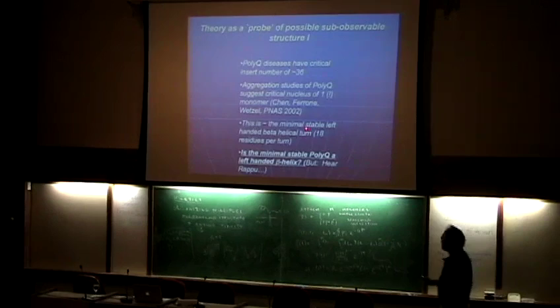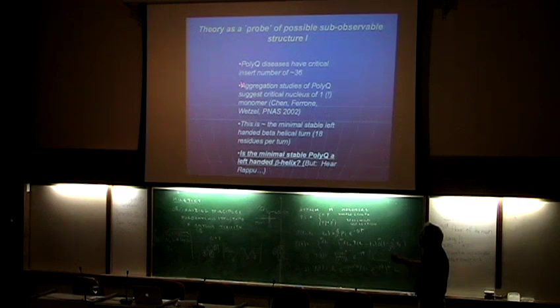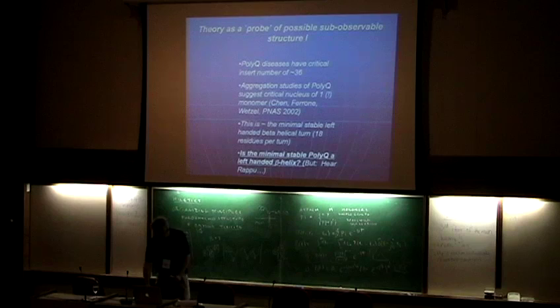One interesting thing about poly-Q is that aggregation studies suggest a critical nucleus of 1, so you can actually infer the start of the Huntington's fibrils from a critical nucleus which is a monomer. One question is: is the minimal stable poly-Q a left-handed beta helix? There's no proof one way or the other, but there's a lot of discussion about this.